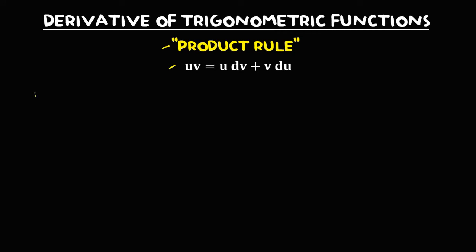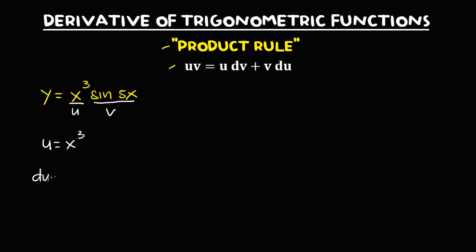So if we have this given: y equals x to the power 3 times sine 5x. For this given, this is u and this is v. So u equals x to the power 3, and the derivative of u — the derivative of x to the power 3 — is 3x to the power 2. Then v equals sine 5x.